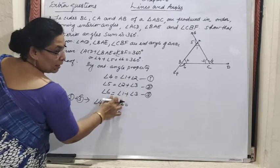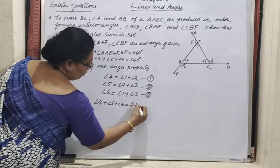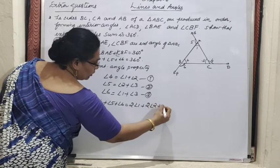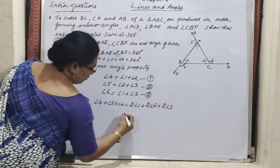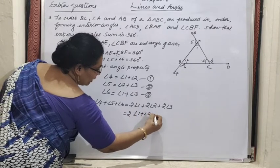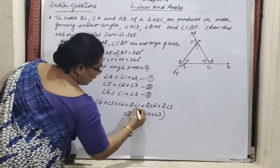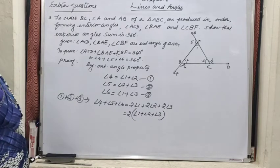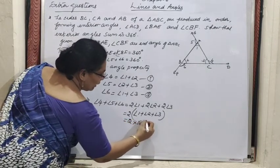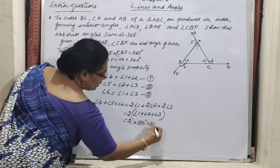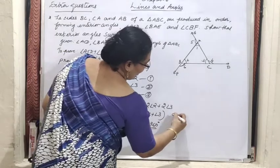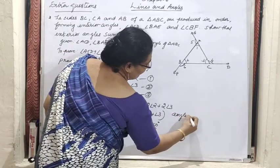The right side gives 2 times angle 1, 2 times angle 2, and 2 times angle 3 — that is 2 × (angle 1 plus angle 2 plus angle 3). By angle sum property of a triangle, angle 1 plus angle 2 plus angle 3 equals 180 degrees. So 2 × 180 equals 360 degrees. Hence proved.